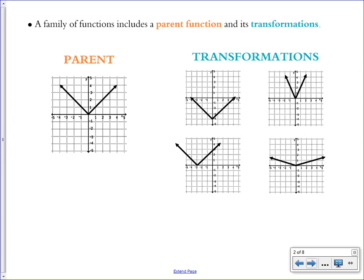What you're looking at here is the parent function for absolute values. The equation of this v is y equals the absolute value of x. The basic function for absolute value is shaped like a v, and all the transformations of it are different things you can do to that v to change its shape or location on the coordinate plane.